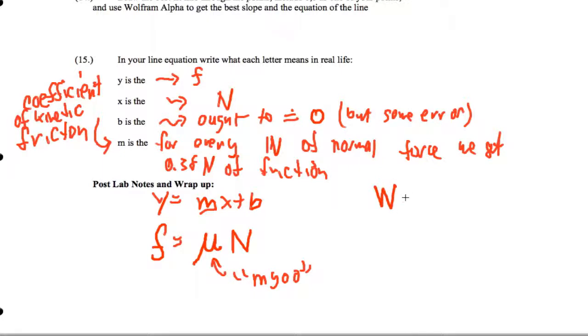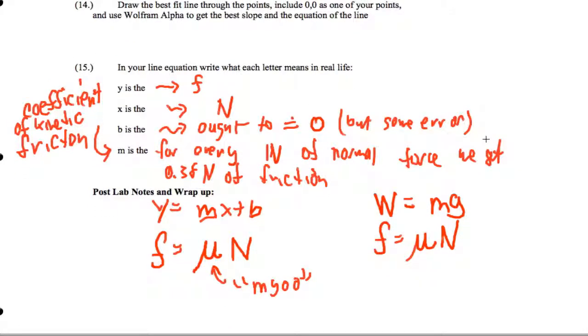That means we have two equations so far. We have weight is mg, mass times the strength of gravity. And we have friction is this coefficient mu times the normal force. So that basically wraps up the lab that we are doing.